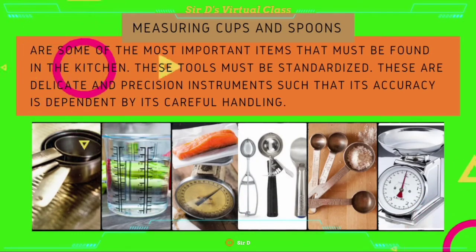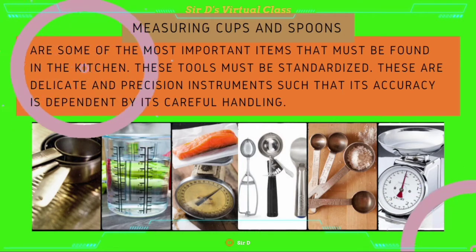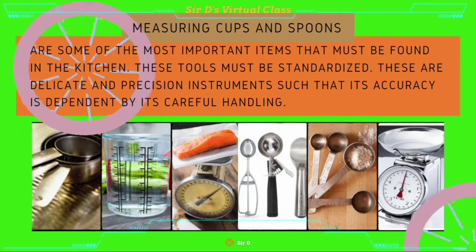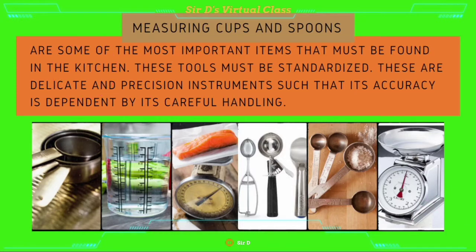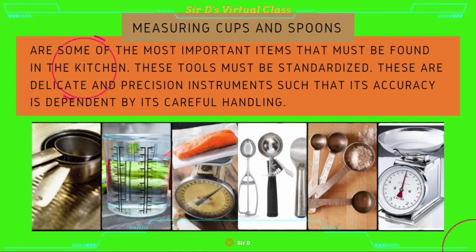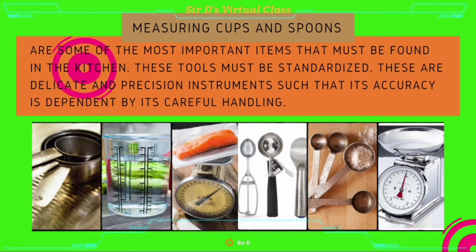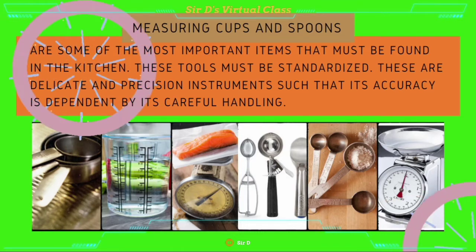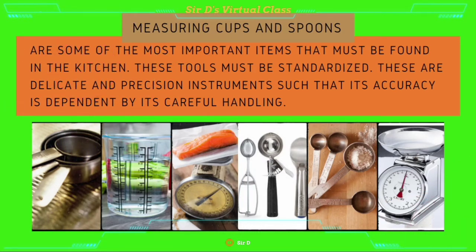Measuring cups and spoons have different types in accordance to their function. These are some of the most important items that must be found in the kitchen. These tools must be standardized, as they are delicate and precision instruments whose accuracy is dependent on careful handling. Some of its kinds are the measuring cup for dry ingredients, measuring cup for liquid ingredients, and portion scales, which are used for weighing a portion or a serving, ranging from one ounce to one pound. Scoops or dippers are used for measuring and serving soft foods such as ice cream.